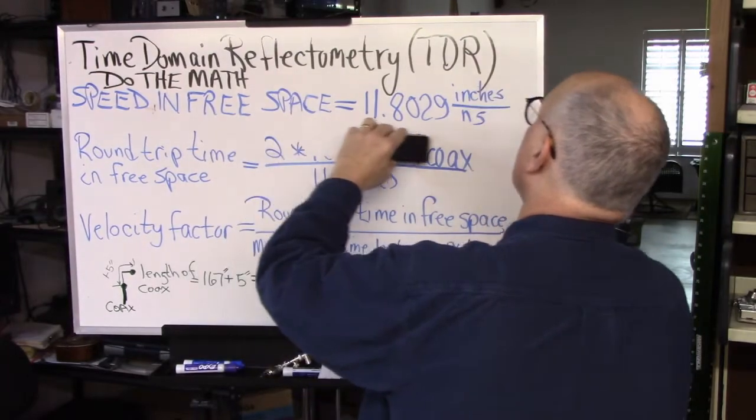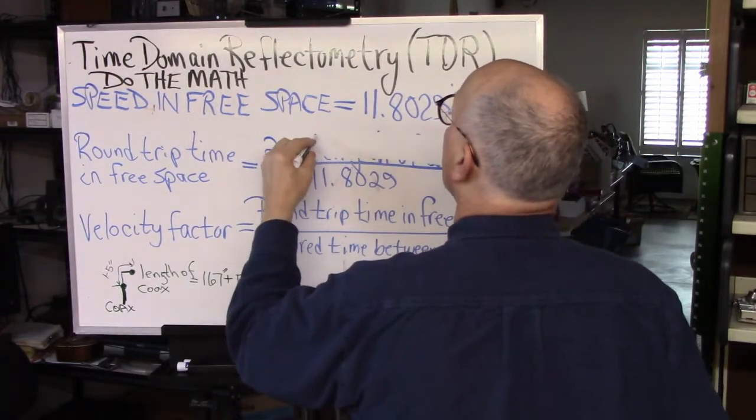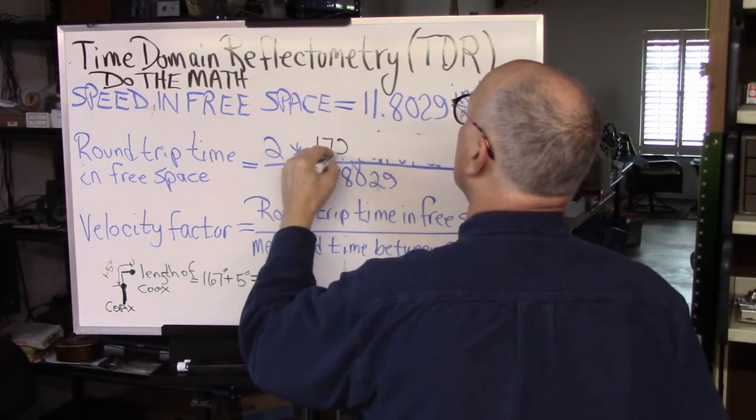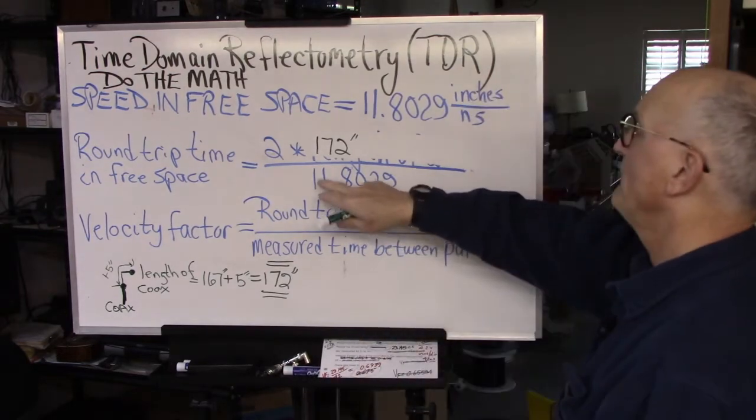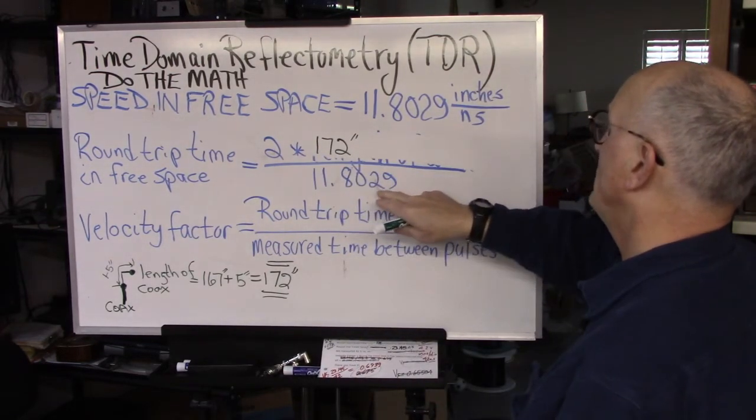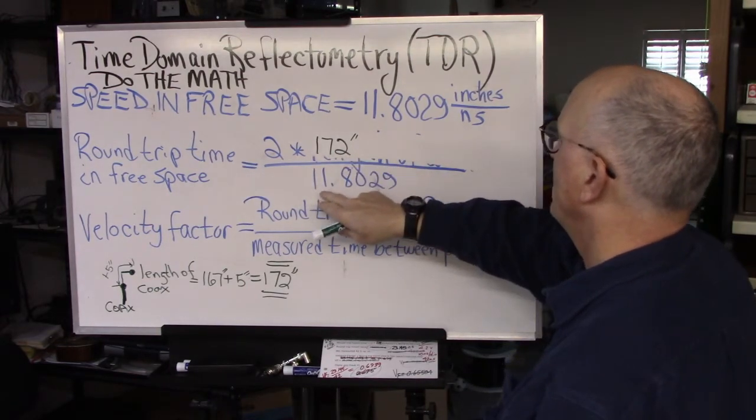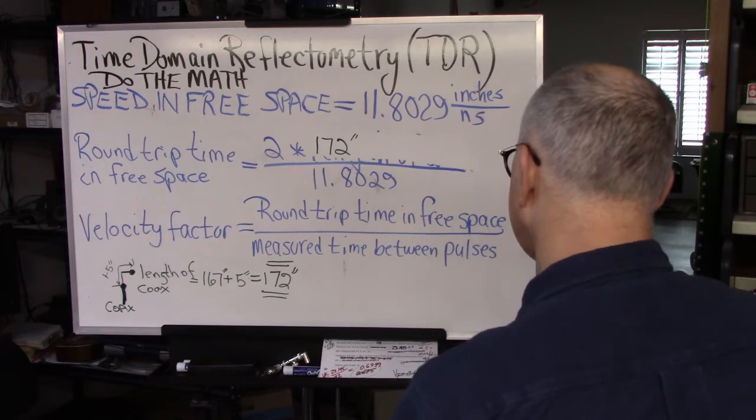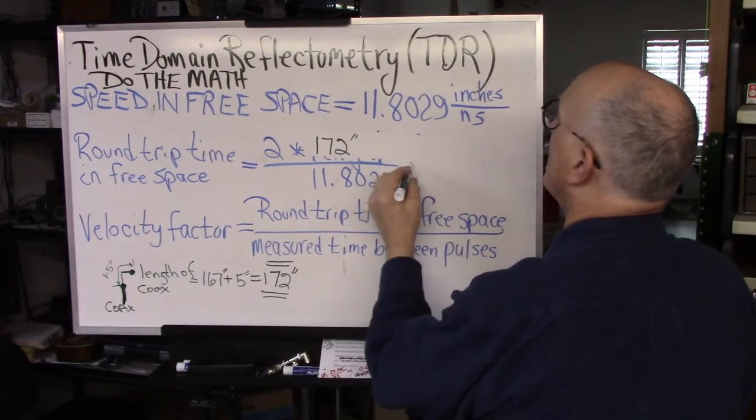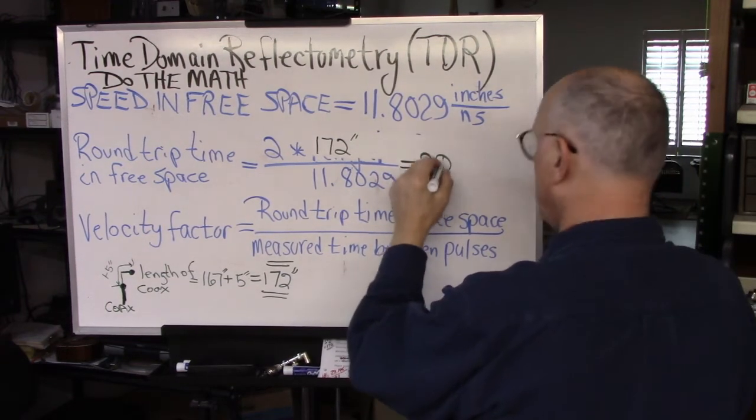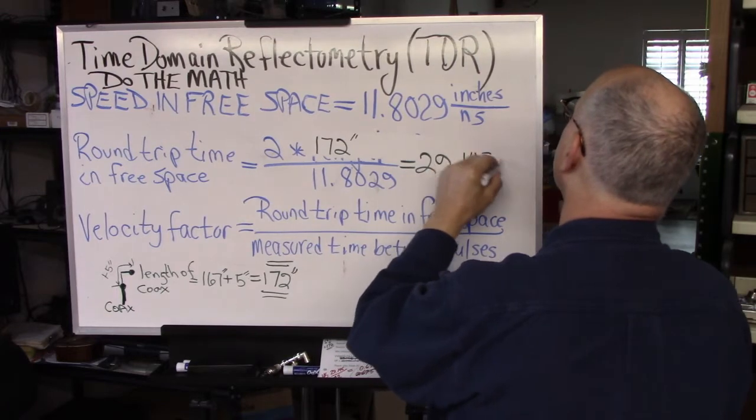So we go up here, length of coax is 172 inches. Divided by our 11.8029, so 2 times 172 divided by 11.809 comes out to be 29.145 nanoseconds.